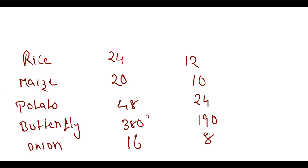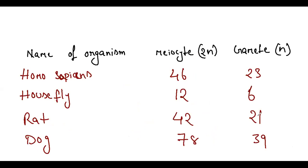Very important: housefly is 12, fruit fly is 8, butterfly is 380. Ophioglossum is 1260. These are some chromosomal numbers for exam purposes, topic-wise. Name of organism, meiocyte, meiocyte is diploid, gamete is usually half.